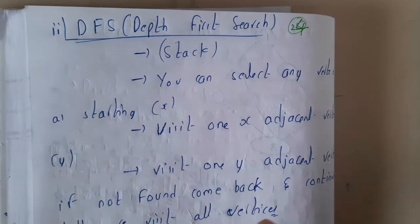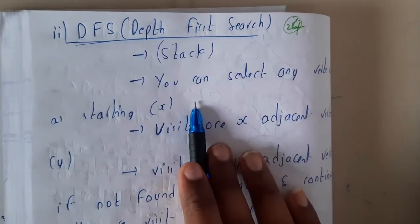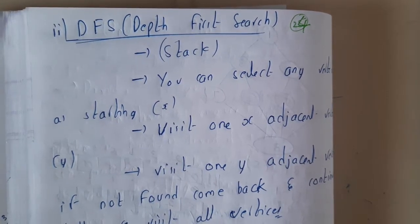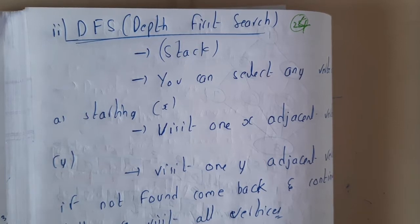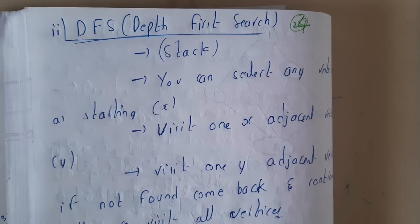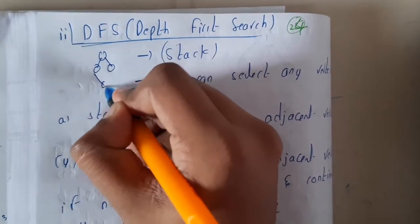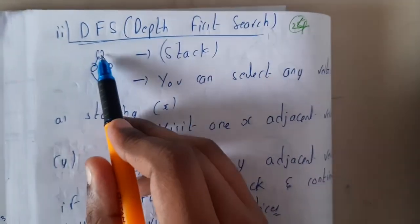This is really easy when compared to Breadth First Search. There you need to visit each and every vertex which is adjacent, but here you will be going in terms of depth. So if there are multiple paths, previously you would visit them one after the other, but here from one vertex you will be going in a particular path.